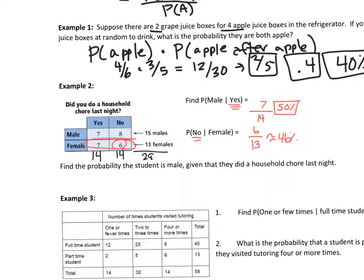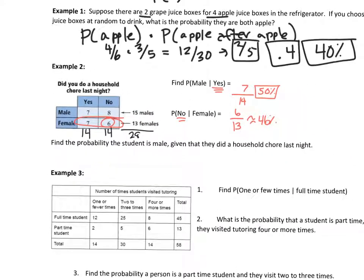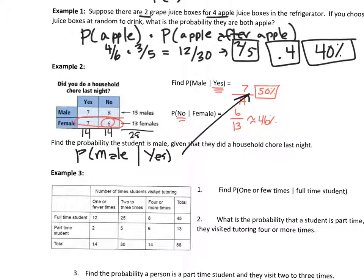Sometimes the conditional probability question is written out rather than using notation: 'Find the probability the student is male given that they did a household chore last night.' This is the same as the probability of male given yes — the same answer as before, which is 50%.